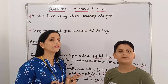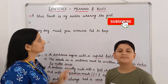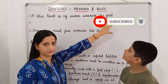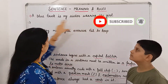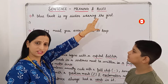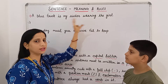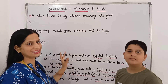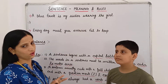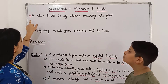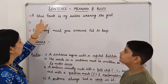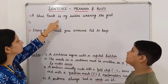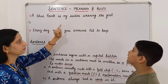To understand the meaning of a sentence, here are some groups of words given. By reading and by arranging these words in order, we will understand whether these are sentences or not. So read the first one: 'a blue frog is my sister, we are in the world.'